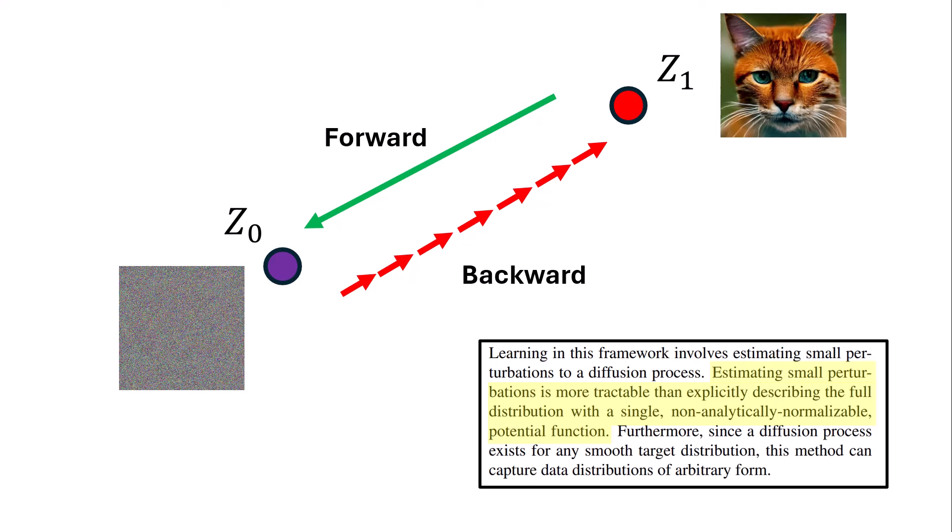Intuitively, if we are at point Zt, this function v has to estimate the slope. Once we have this slope, we can take infinitely small steps starting from Z0 and go towards Z1. So we need an integral to solve this equation. But in practice, we don't have enough resources to do it infinitely and have this transmission from Z0 to Z1.